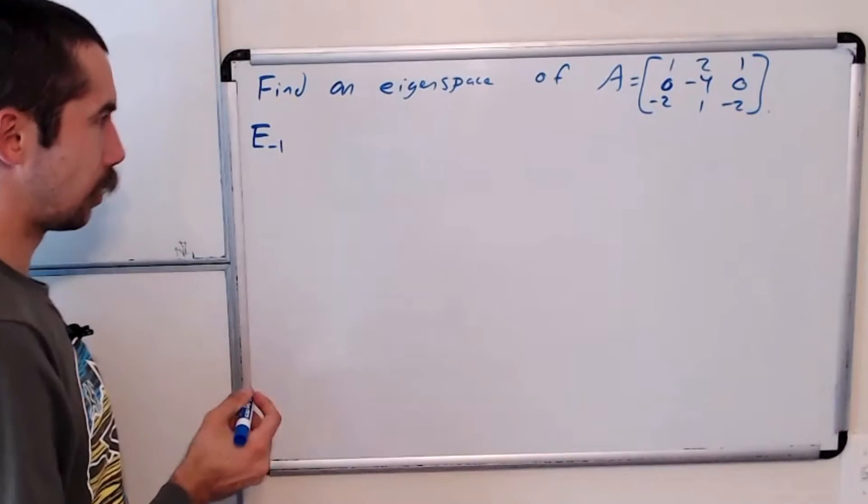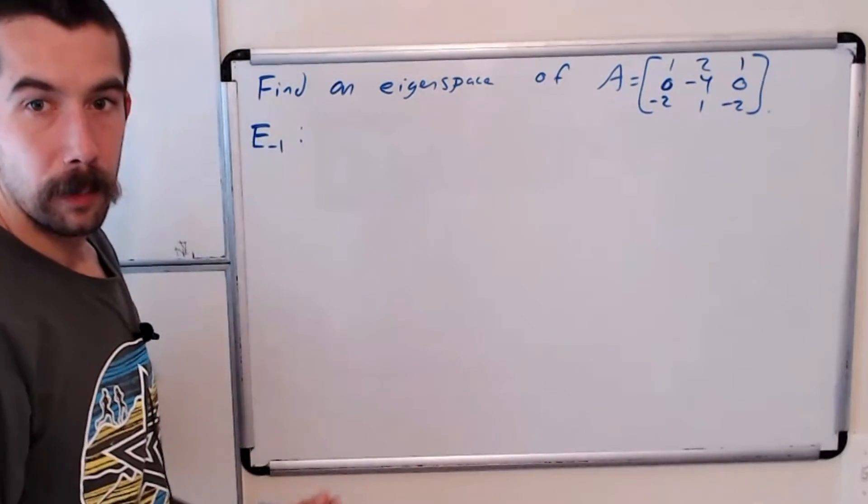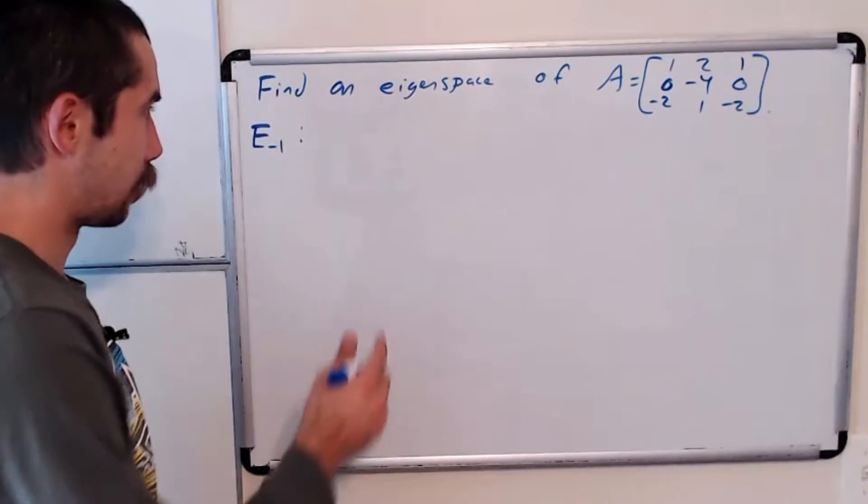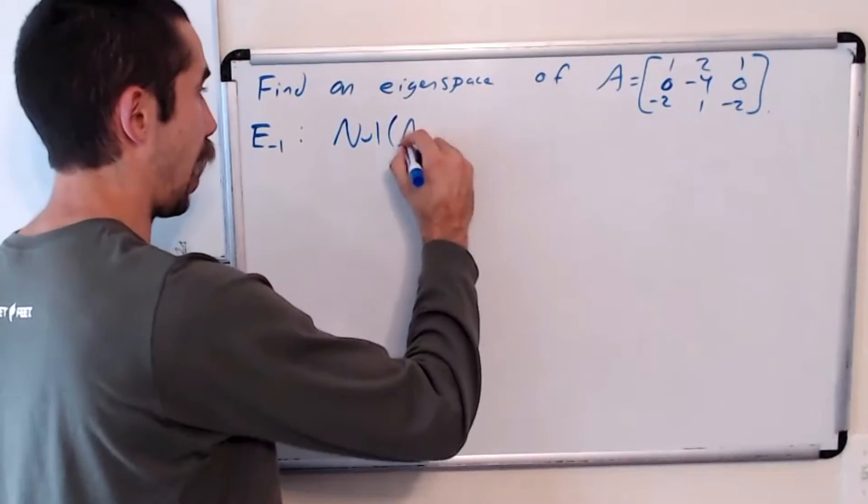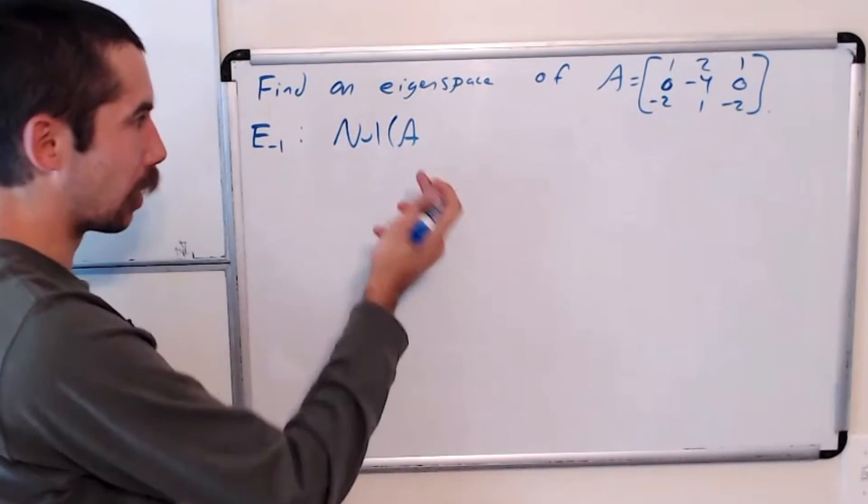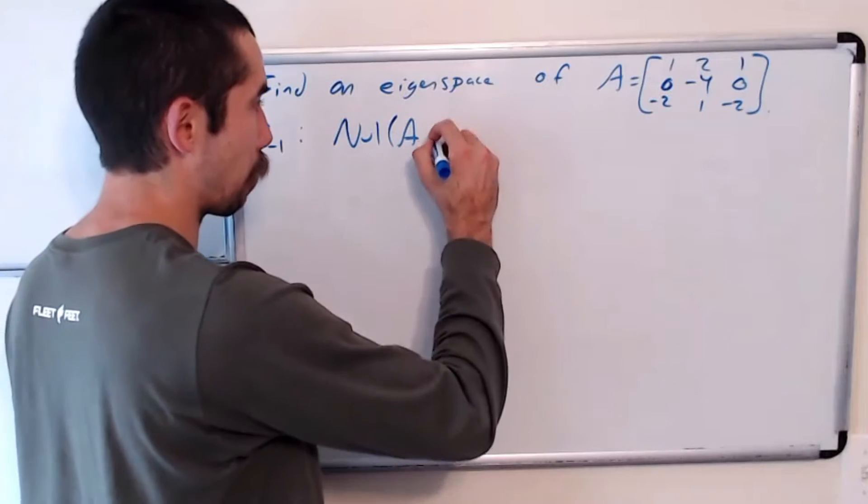To find that, we want to find the null space of A minus negative 1 times I, so A plus I.